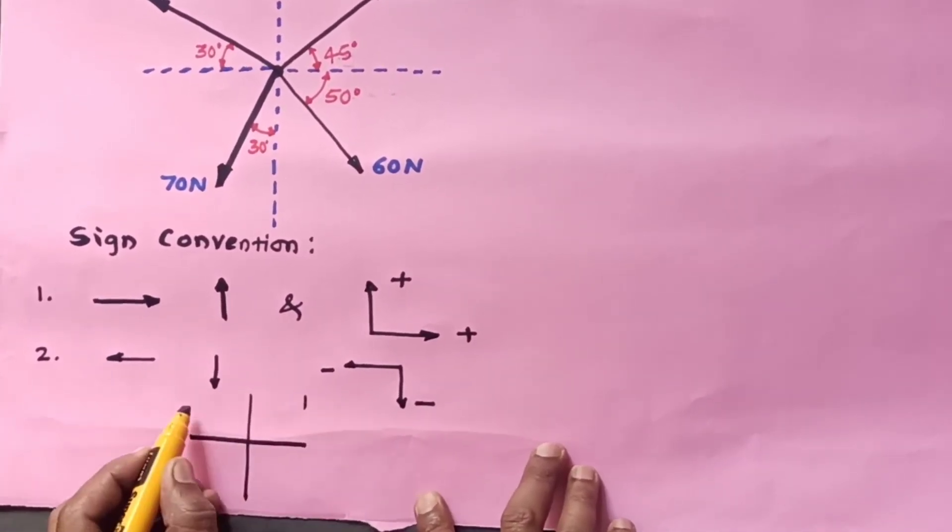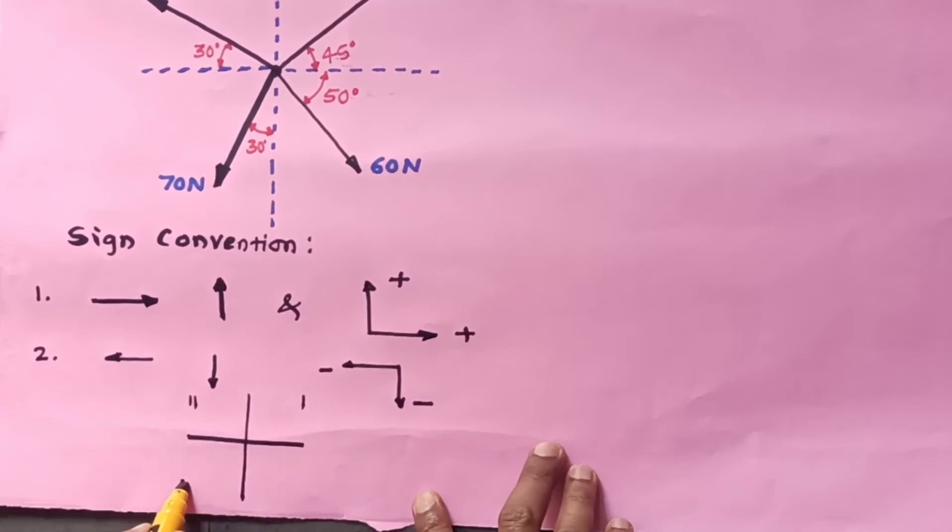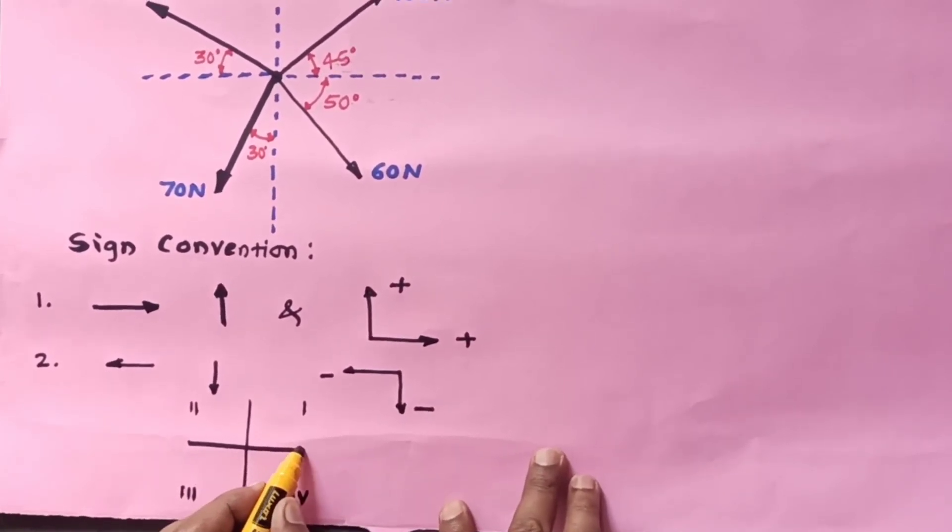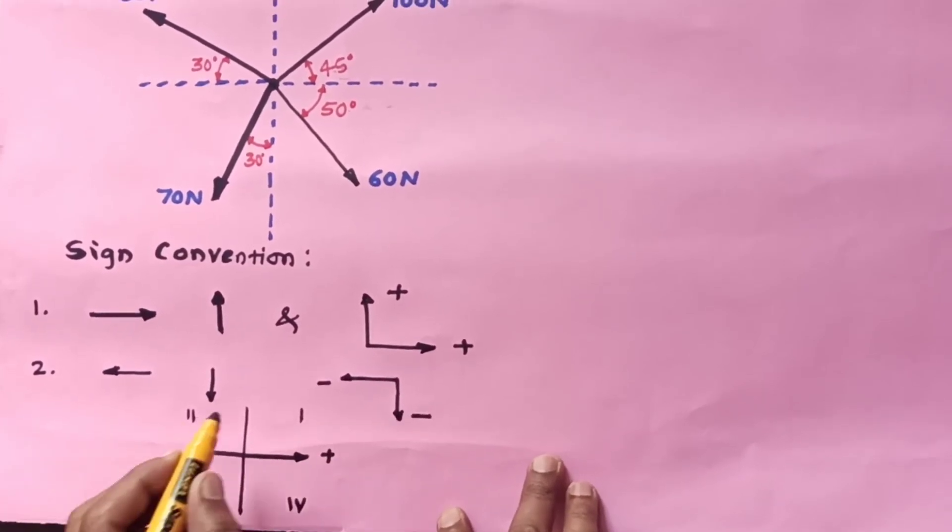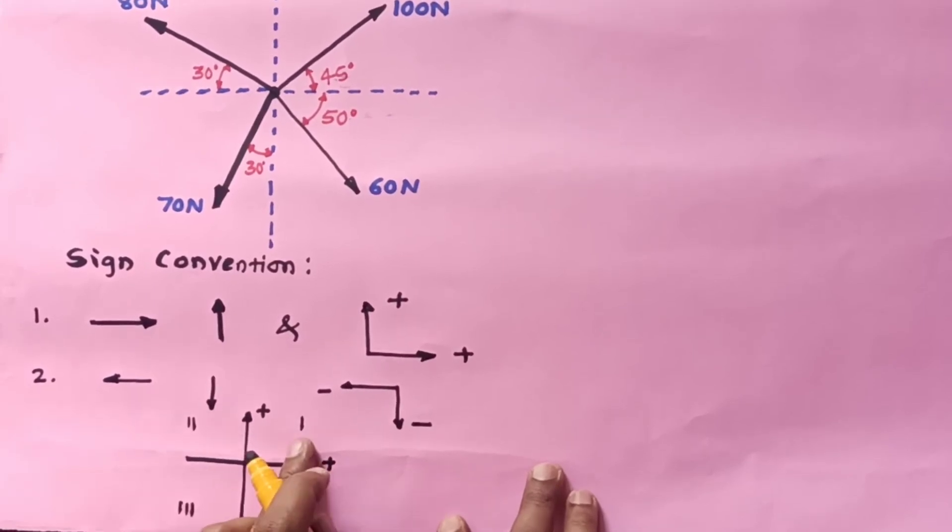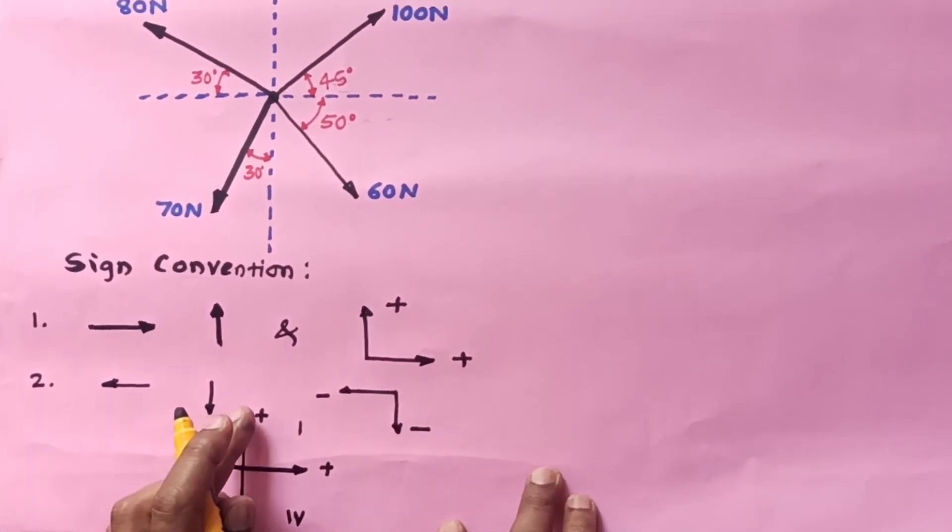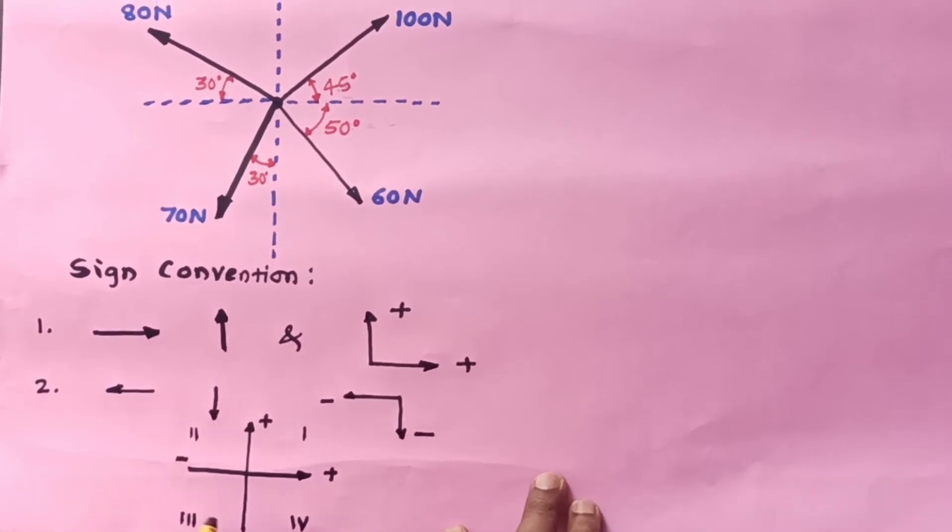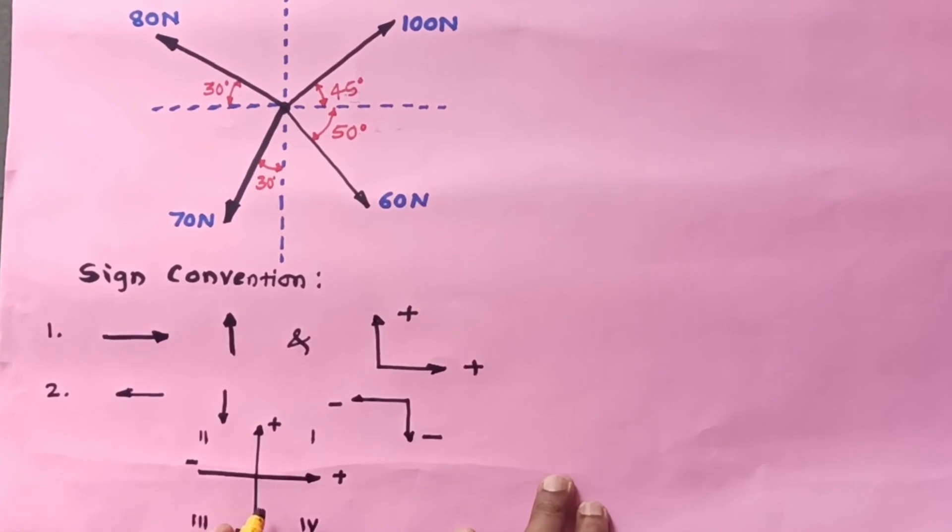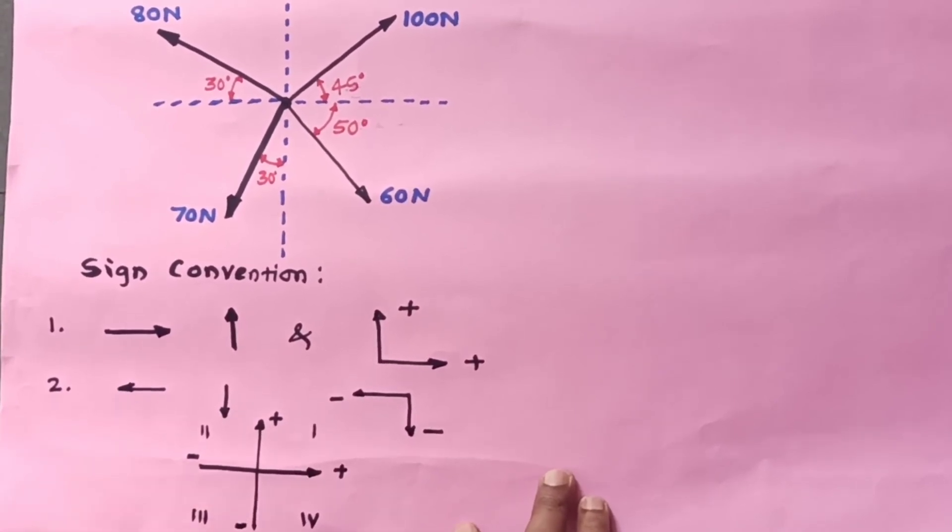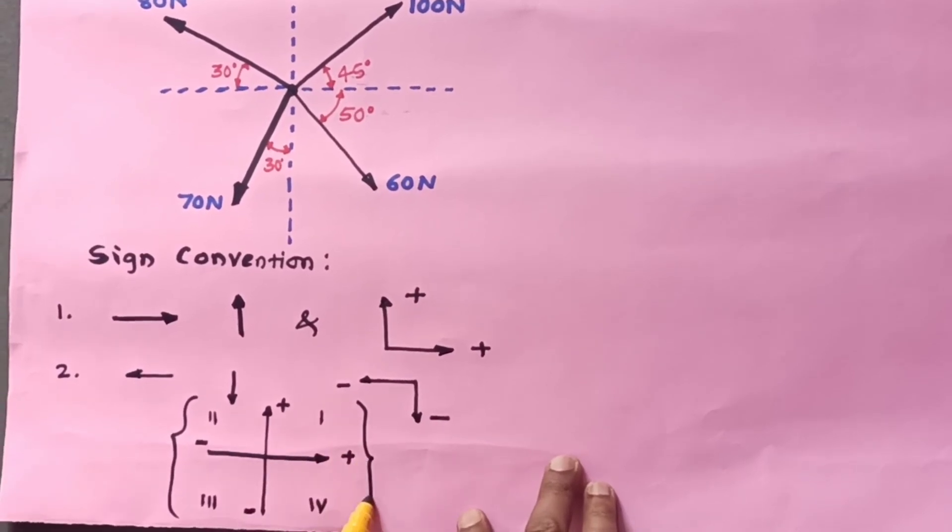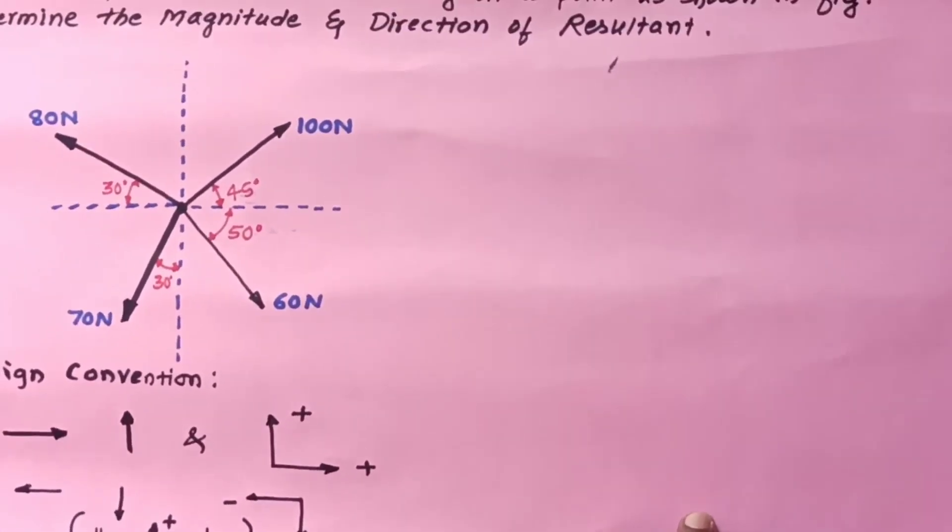In a quadrant system: first quadrant is positive-positive, second quadrant is positive and minus towards the left side, third quadrant is minus-minus, and fourth quadrant is plus-minus. This is the representation of sign convention. After that, you need to resolve the forces.